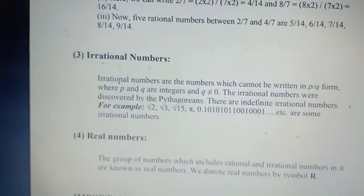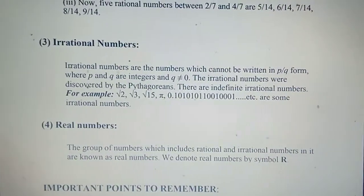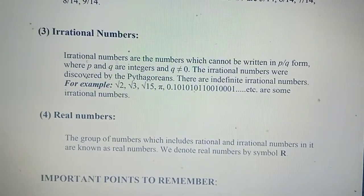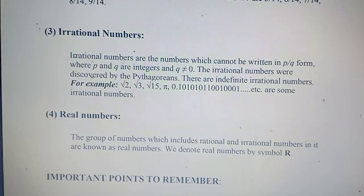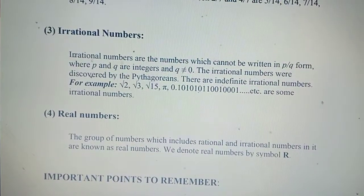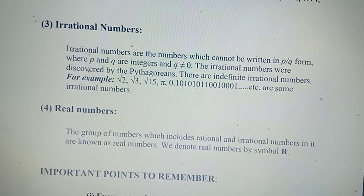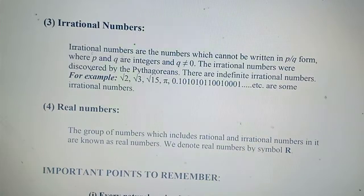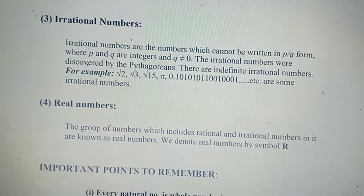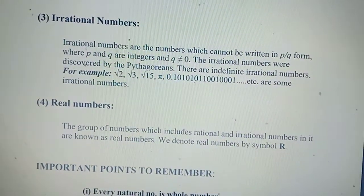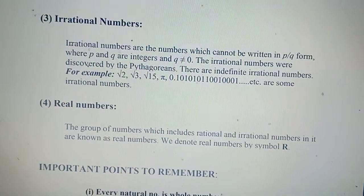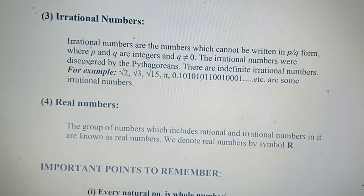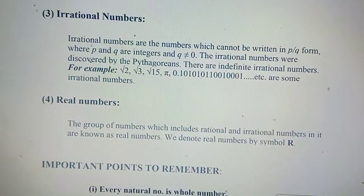Now we come to irrational numbers. Irrational numbers are the numbers which cannot be written in P/Q form, where P and Q are integers and Q is not equal to 0. Irrational numbers were discovered by the Pythagoreans. There are indefinitely many irrational numbers — for example, √2, √3, √15, π, and so on.